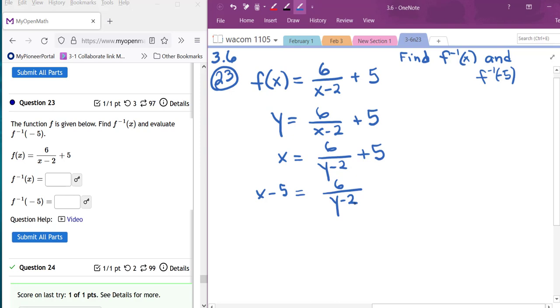And then the problem is my y is in the denominator. So I have to get it out of there. So I'm going to need to multiply by this denominator so that I don't have a fraction. So I'm going to multiply on both sides by y minus 2.